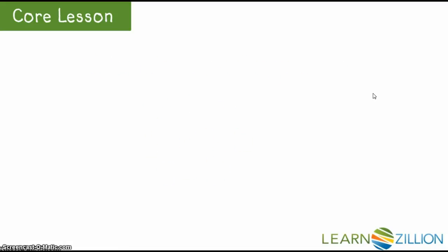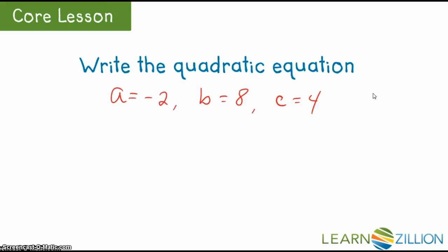Now that we have solved for a, b, and c, we simply write the quadratic equation by replacing a with negative 2, b with 8, and c with 4.